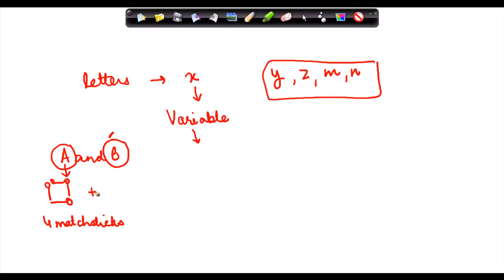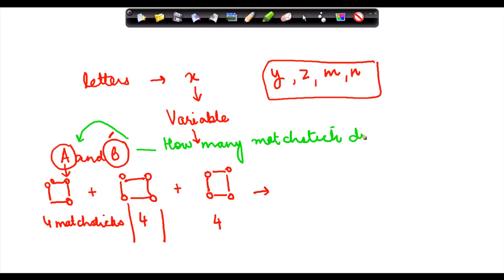Now A got excited and then he formed another square. And he found out that there were another four matchsticks which he used. And then he formed the third one. Again he used four matchsticks. Now B came and he asked a question from A. Hey A, how many matchsticks do you need to form six squares?